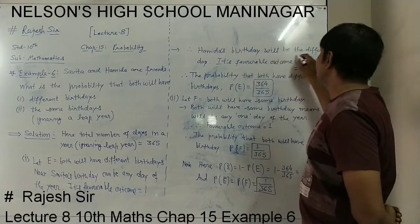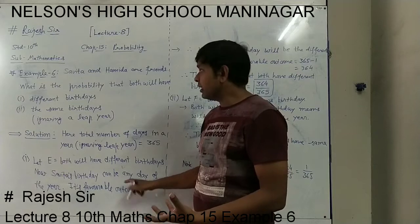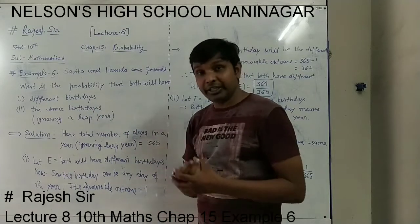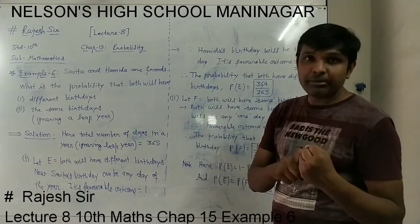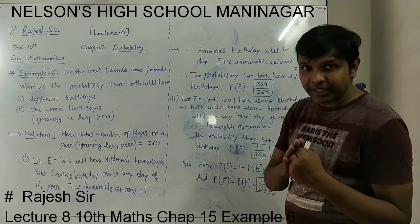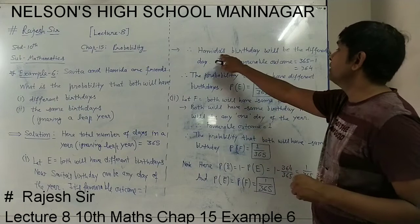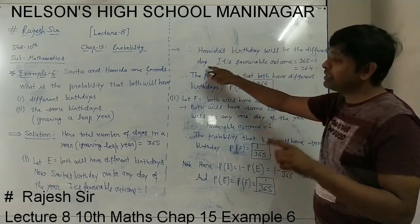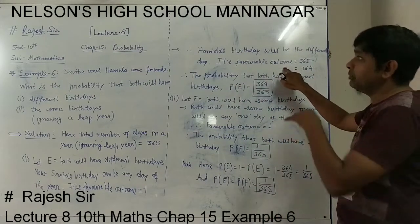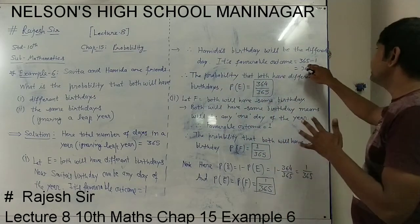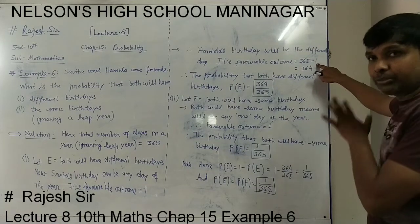Now Hamita's birthday will be a different day. If one day is selected for Savita and we want different birthdays for Savita and Hamita, then the same day cannot be for Hamita. So that one day which is for Savita, we have to subtract from all 365. Hamita's birthday will not be on Savita's birthday, so we subtract 1.